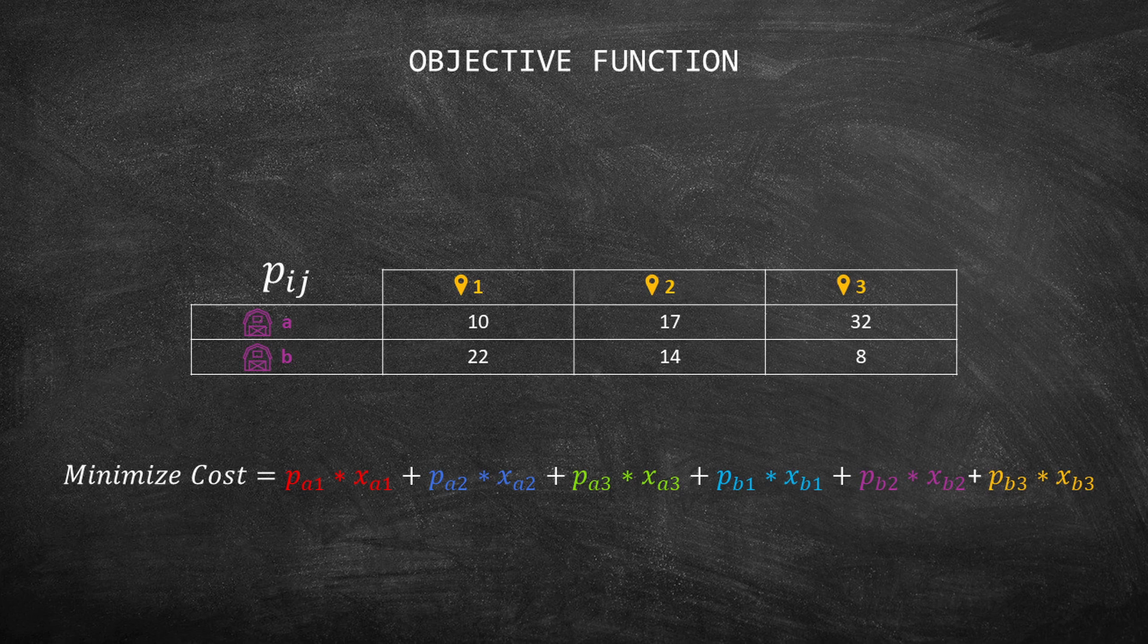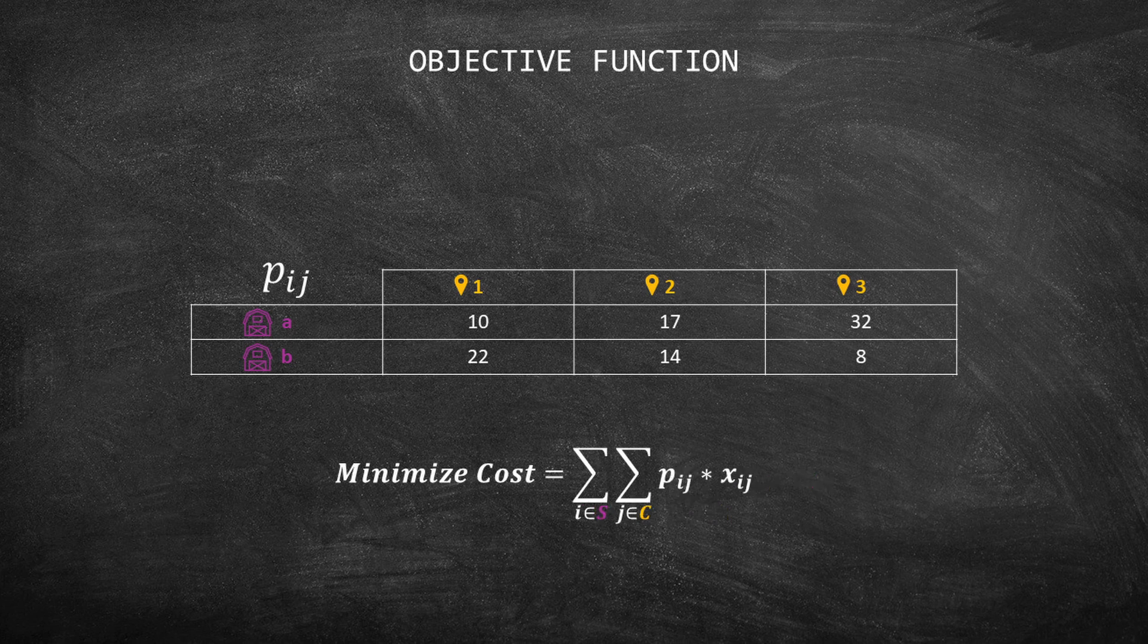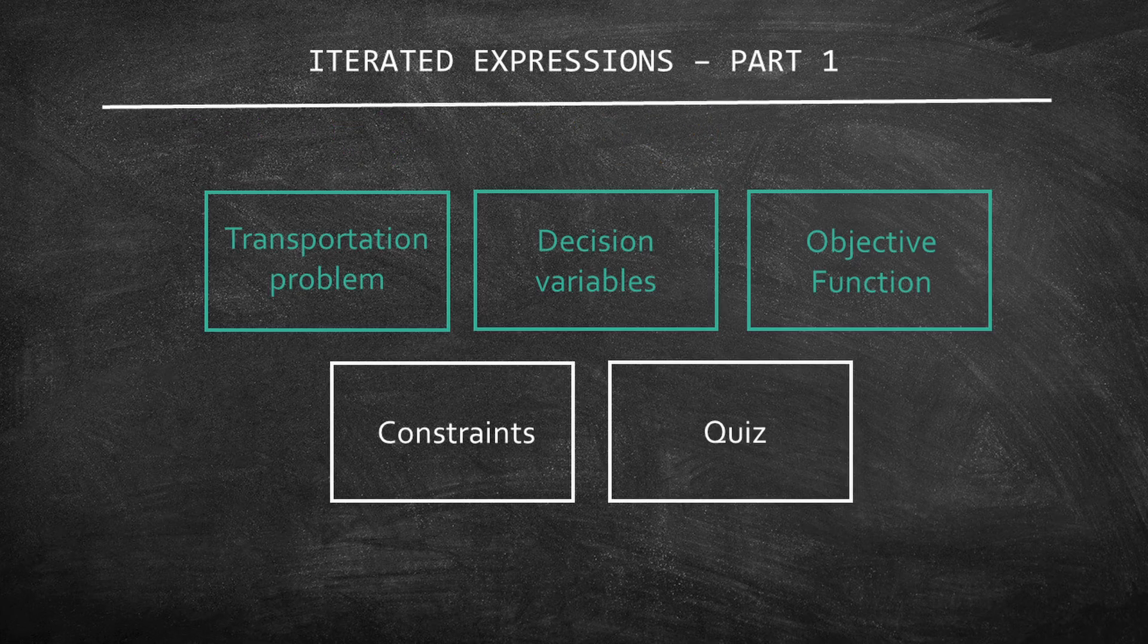So I can write PIJ times XIJ. In this notation, the letter I represents each element in set S, and letter J represents the customers in set C. Since I am adding each XIJ times PIJ, I write that the objective function is to minimize the sum of I in set S and J in set C of XIJ times PIJ. The double sum comes from the fact that I have the combination between elements in set S and elements in set C in a single equation. Before we move to the constraints, let's add this form of the objective function to the compact model.